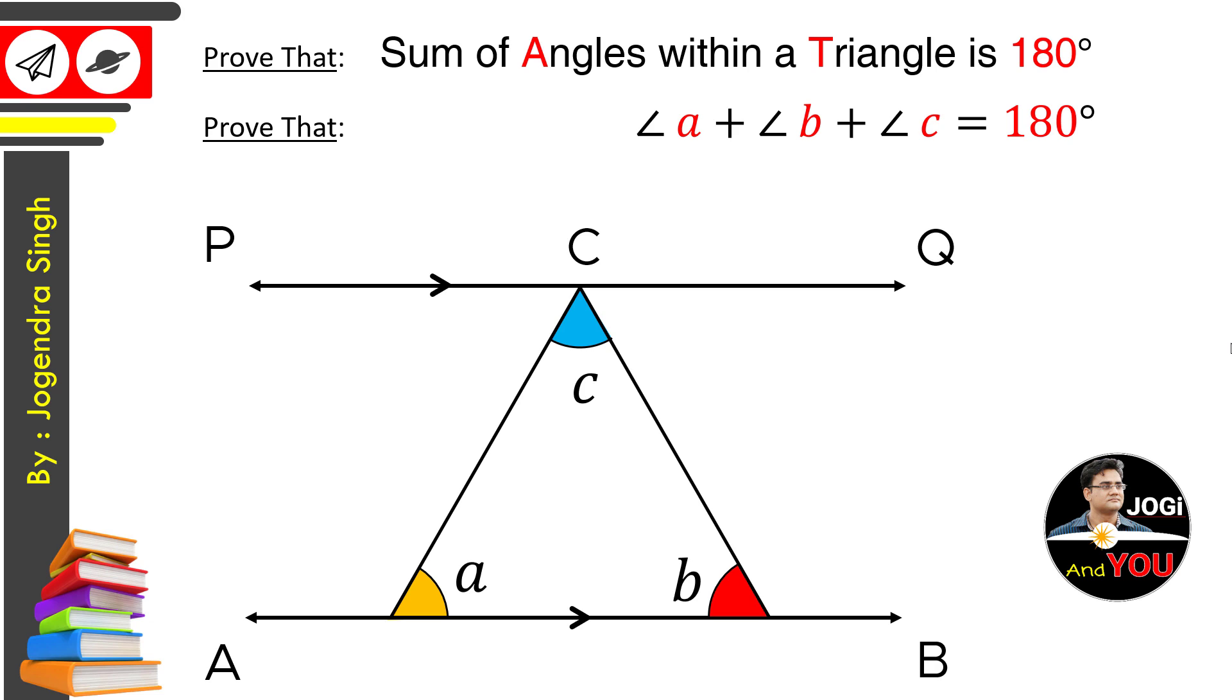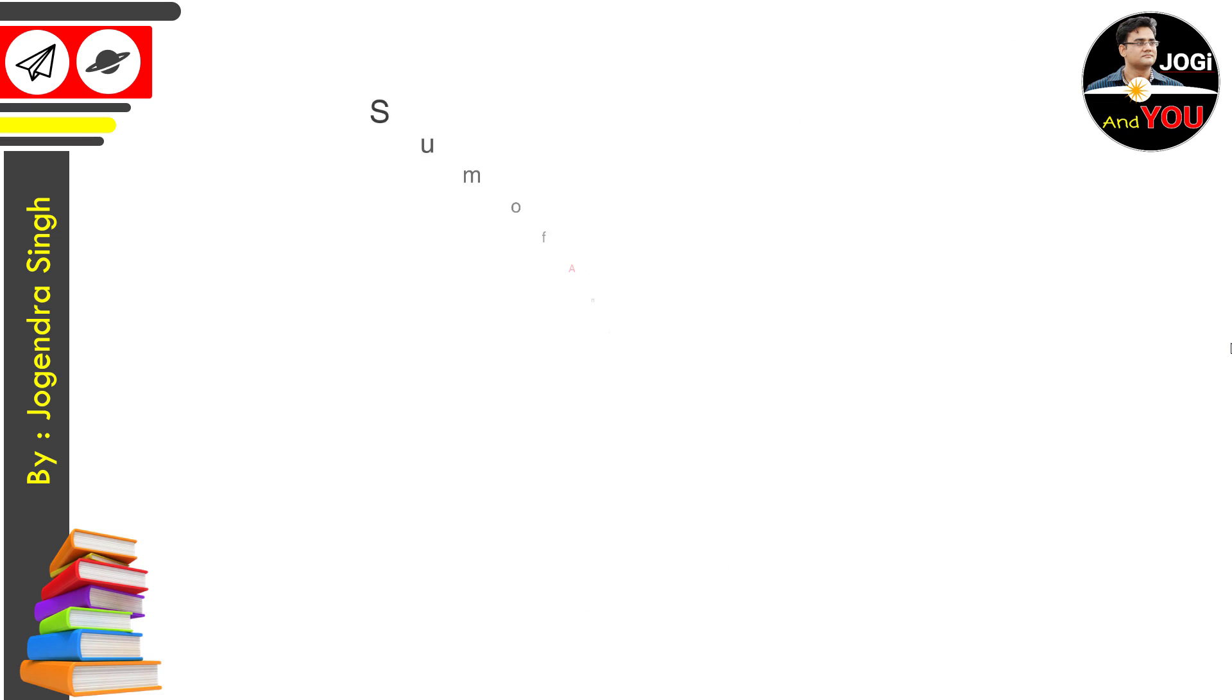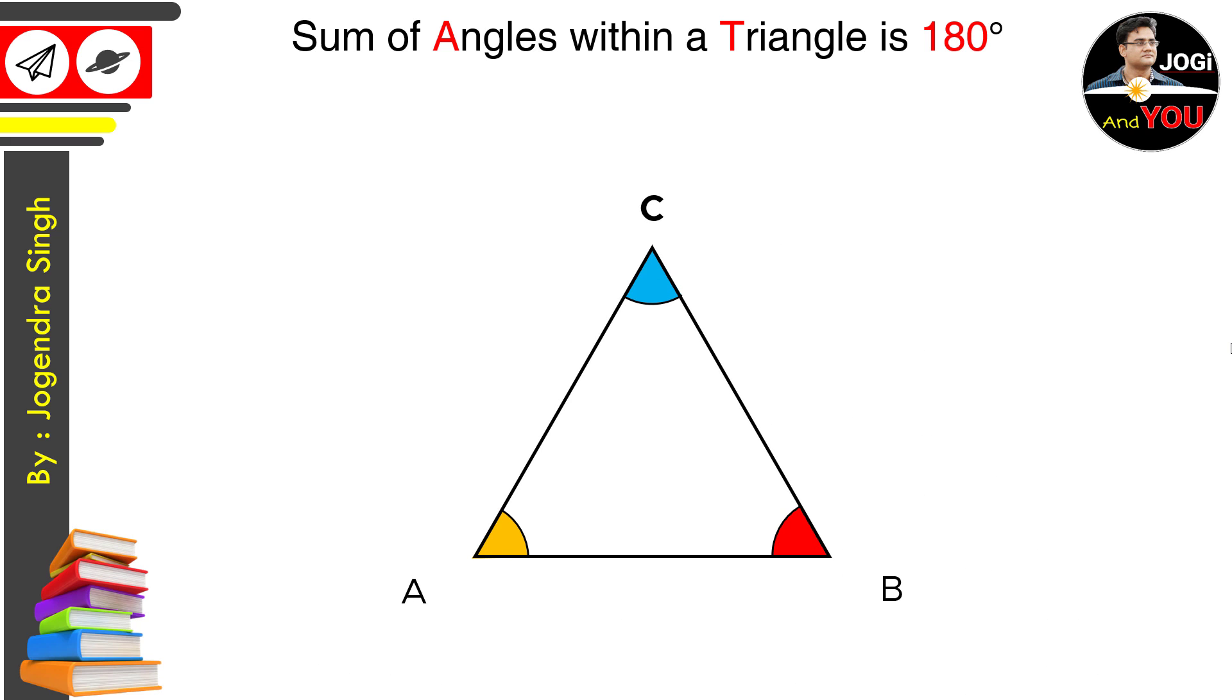We know that the sum of all angles within a triangle is 180 degree, but when we have to prove this fact, we can't use this already proven fact. What to do now? Let's prove that for a triangle ABC. We will use some other property of triangles to prove that.